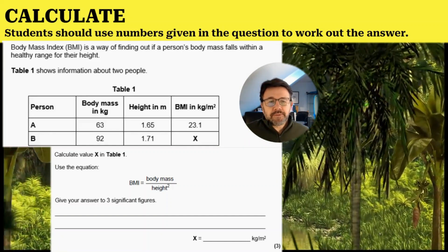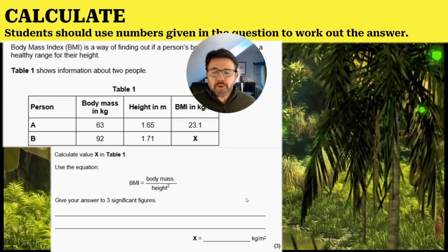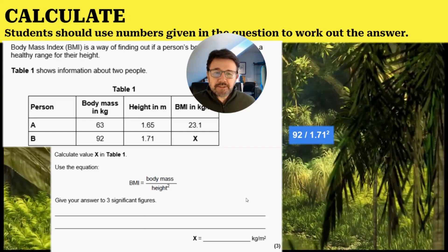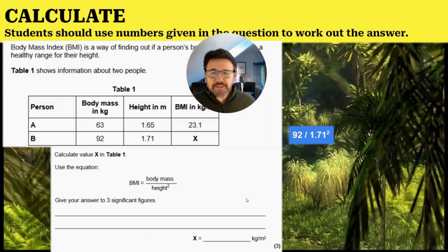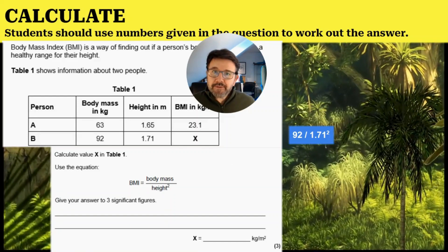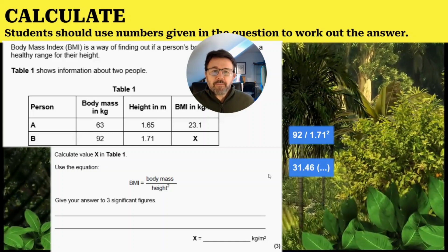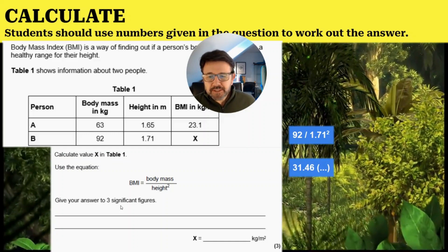First of all, we need to work out the BMI. That will be 92 divided by 171—the body mass divided by the height—but remember to square it. You need to square it and you'll get 31.46 with lots of numbers.